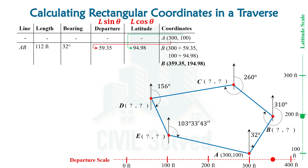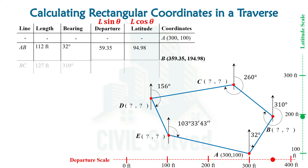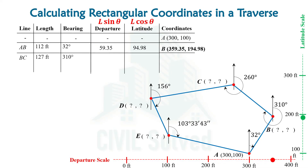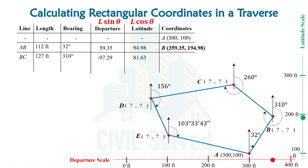Now let's move on to calculate the coordinates of point C. For that we need to calculate the departure and latitude of BC line. These are the departure and latitudes, so adding with the previous one we will be having the coordinates of point C.